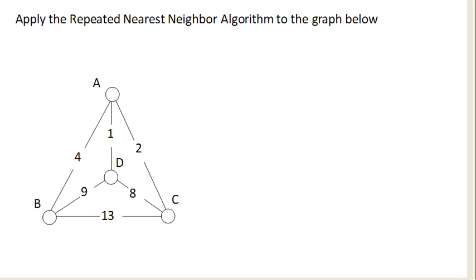So the nearest neighbor algorithm turns out to be so cheap and easy that a quick improvement to it is called the repeated nearest neighbor algorithm. And the idea here is that we repeat the nearest neighbor algorithm starting at each of the vertices.